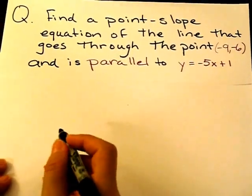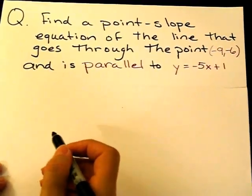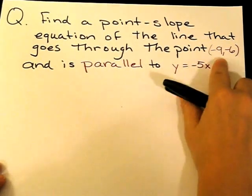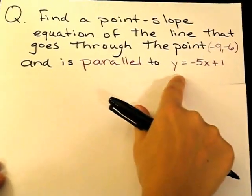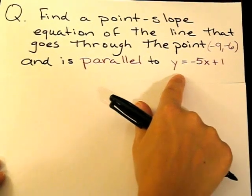Hi, I'm Shawna, and I'm going to find a point-slope equation of the line that goes through the point (-9, -6) and is parallel to y = -5x + 1.